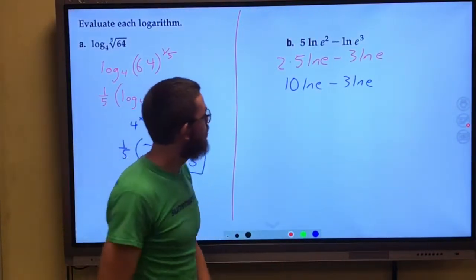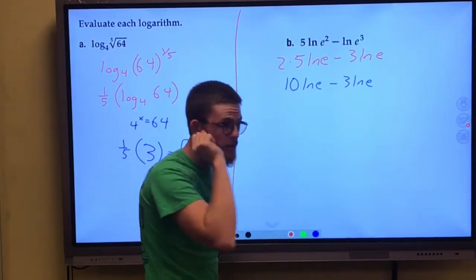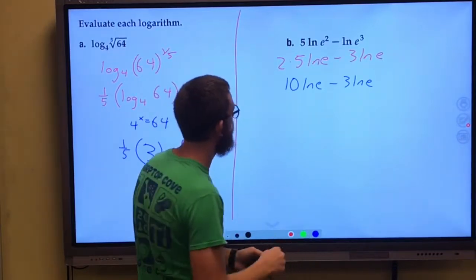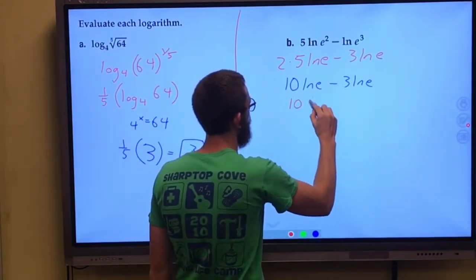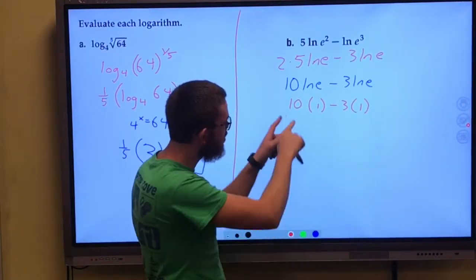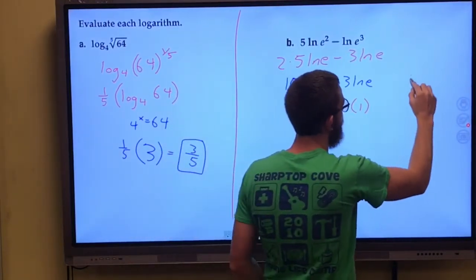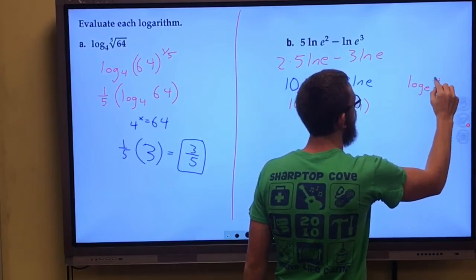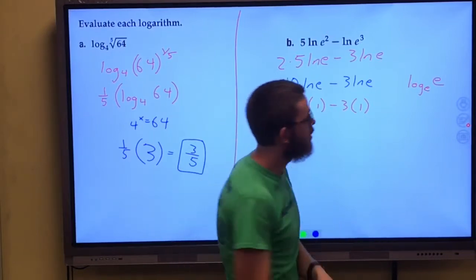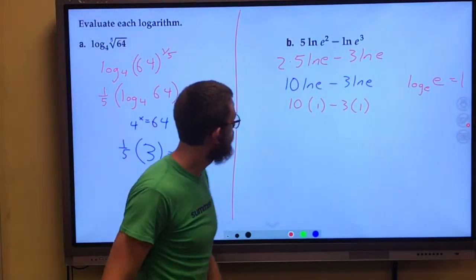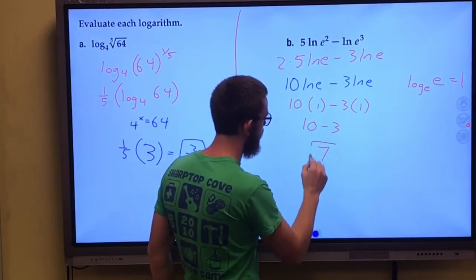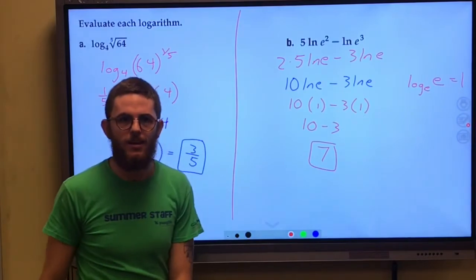And you know what natural log of e is? Well, natural log is log base e, so e raised to what power is e? 1. Natural log of e is 1. Again, if you need to see that out, natural log of e is the same thing as log base e of e. And e raised to the first power is e, so this equals 1. So 10 to the power of 1 minus 3 to the power of 1, 10 minus 3 gives us 7. And look how nice that answer was.